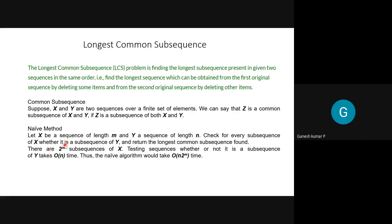For a sequence of four letters, we calculate 2^m which is 2^4. But if the sequence is very large — 16 or 17 letters — calculating 2^16 is impossible; it will take too much time. The brute-force method takes O(n × 2^m) time, so we need a better approach to find the longest common subsequence.